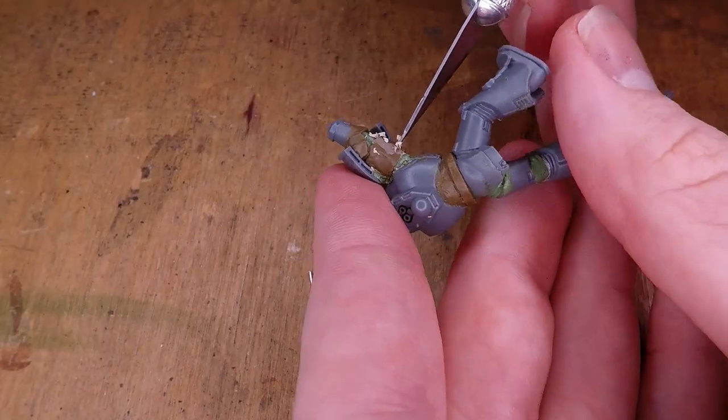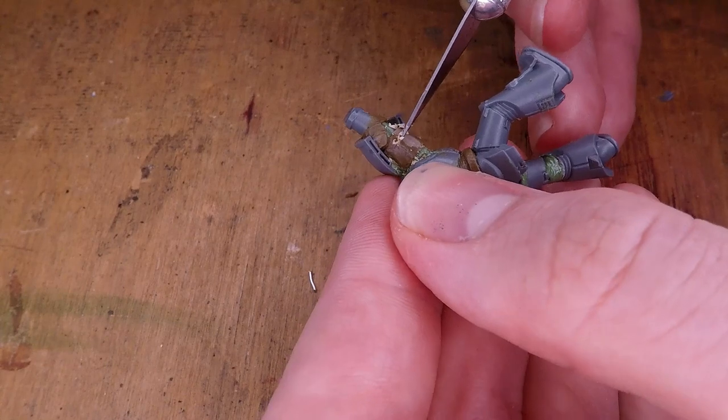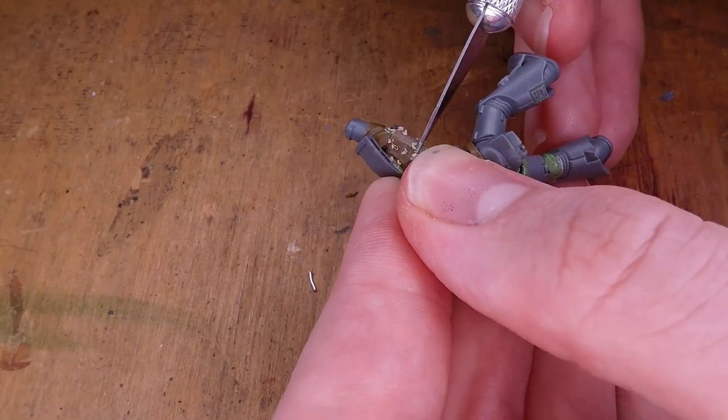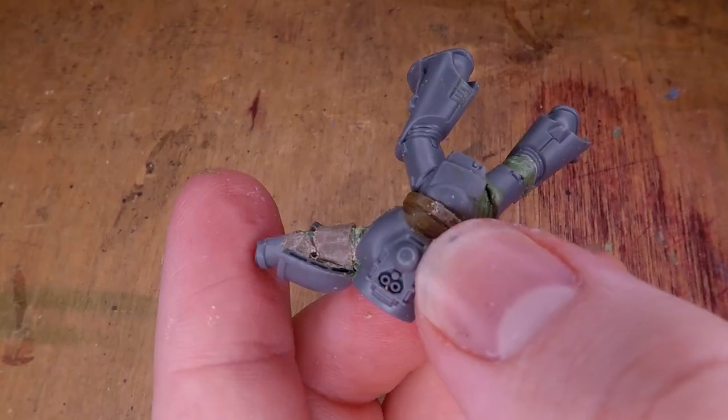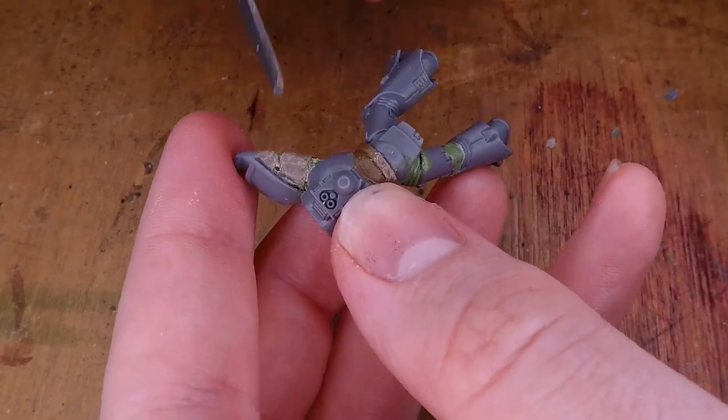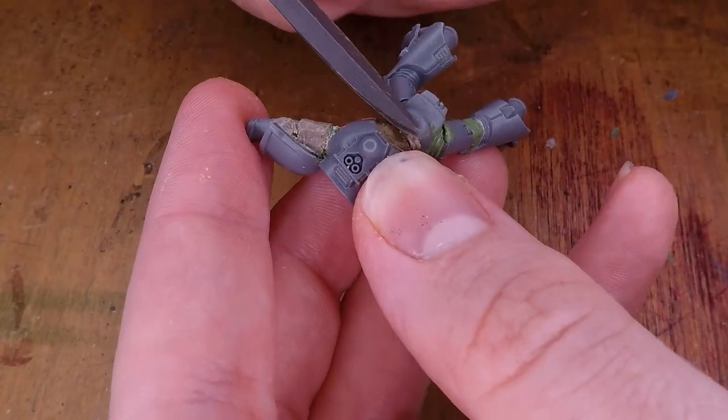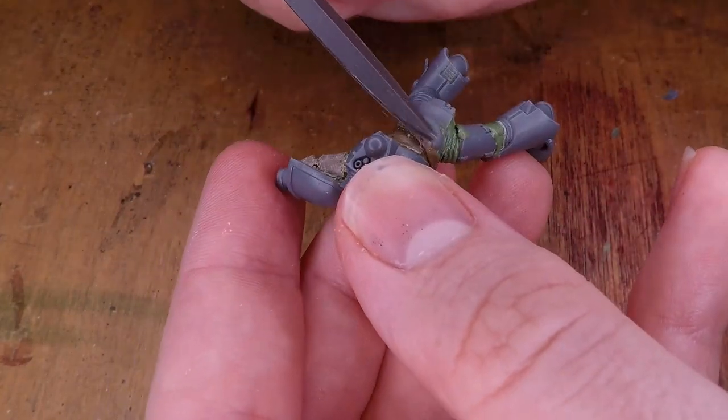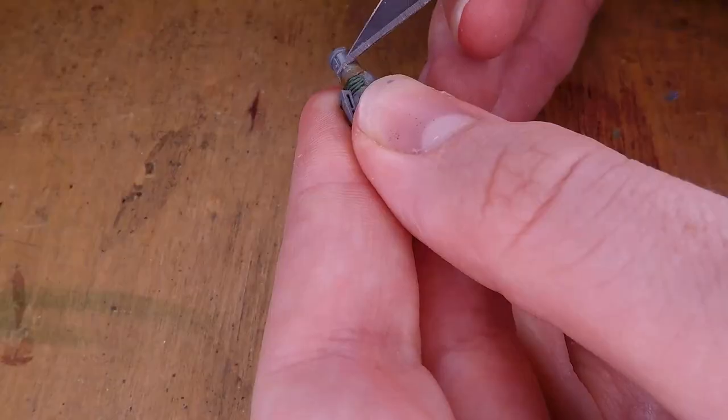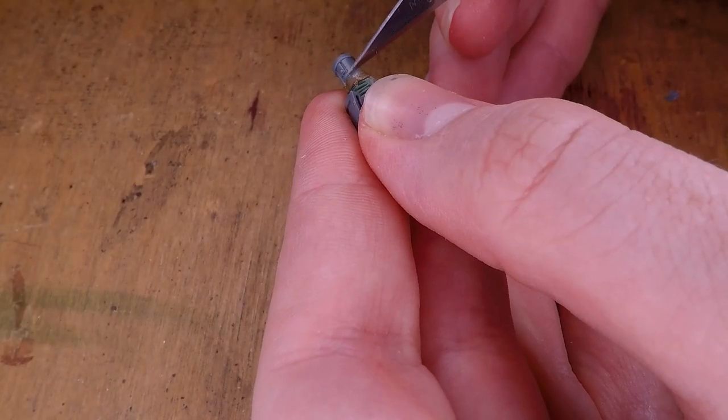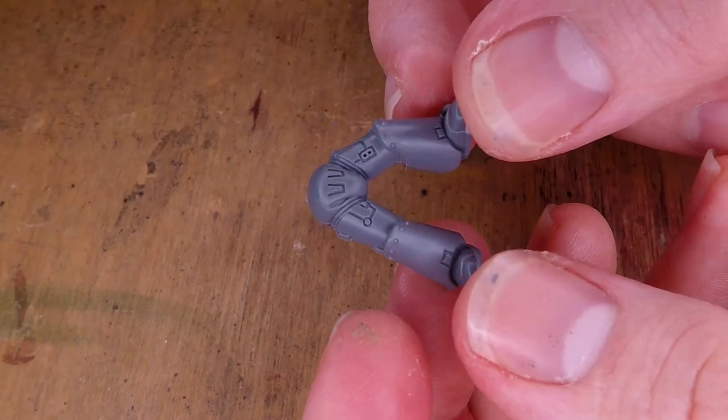Now I go back to all of the Milliput we had added, now that it's set, and start to sand and scrape away at that to make the edges nice and crisp. As well as making sure, in the case of the belt, that it's worked seamlessly with the plastic of the miniature, doing the same on the arm that we had just finished.